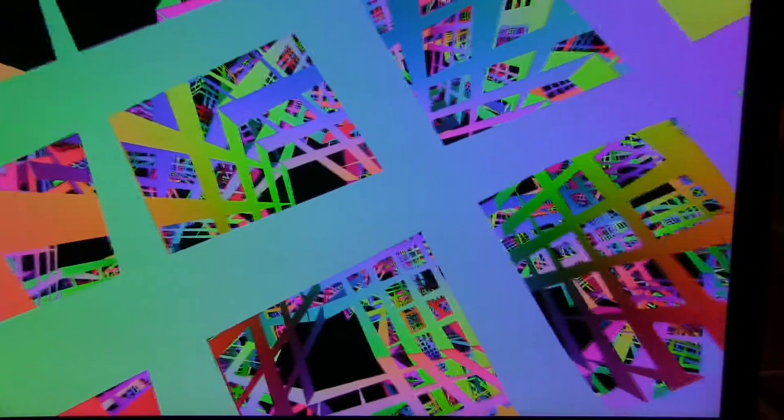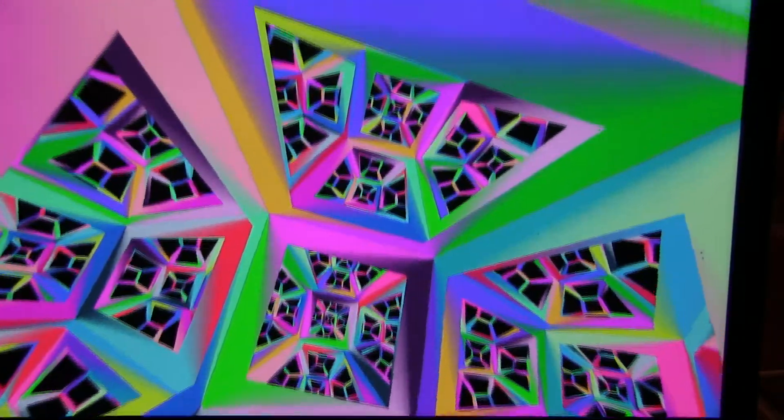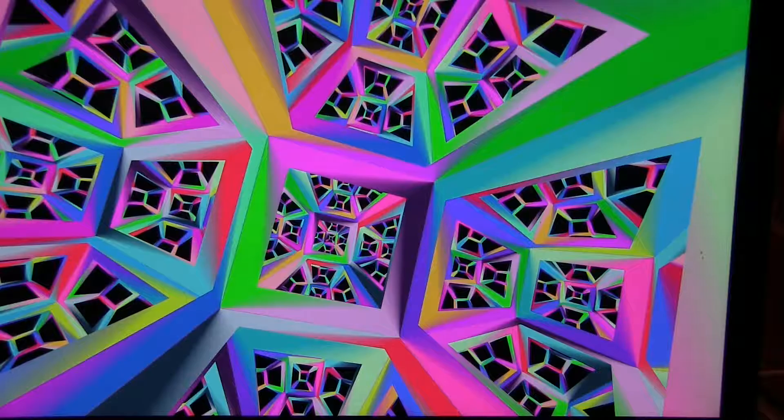Number seven, like a grid of squares there. Mm-hmm. And a grid of squares. Looks like it's a little four dimensional here. Huh. Yeah. Right. This appears to be where we started. Yep.